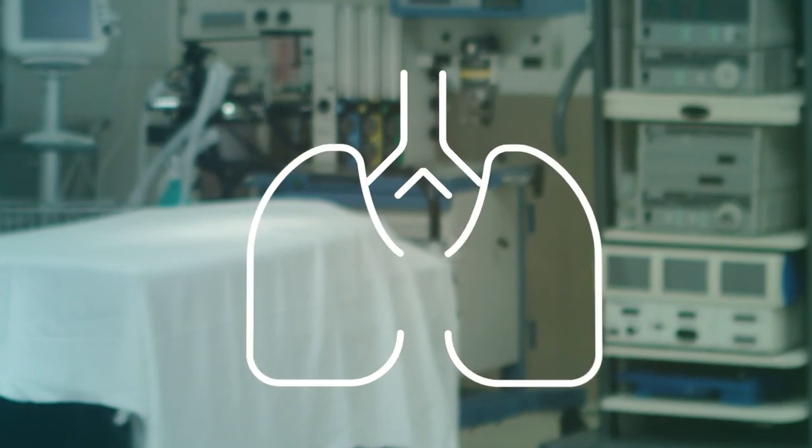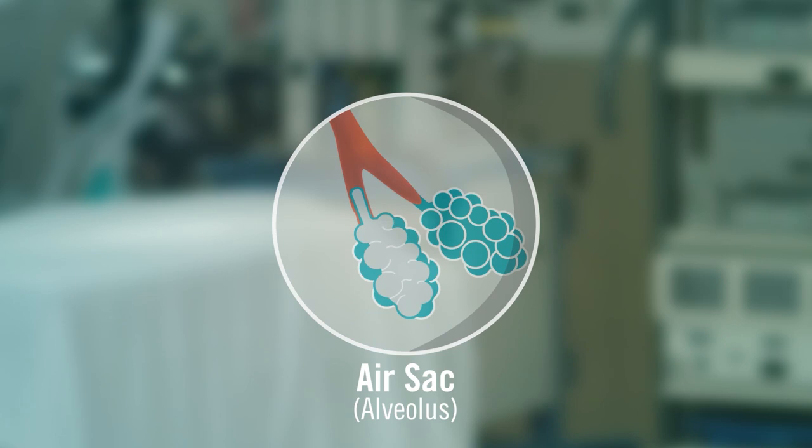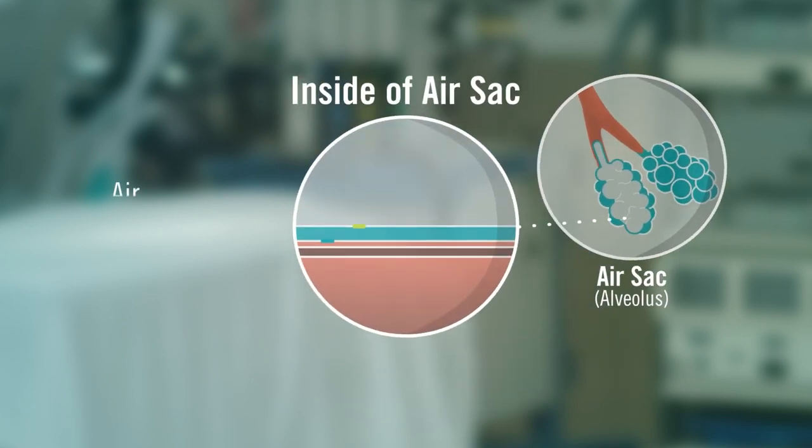Your lung is made up of millions of tiny air sacs, too small to see without a microscope. The wall of each air sac is very thin, about 10 times thinner than a strand of hair.